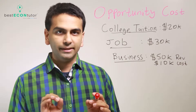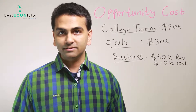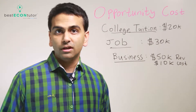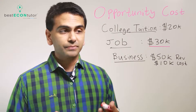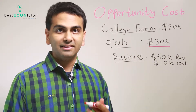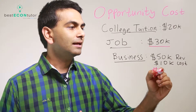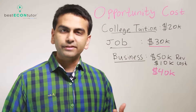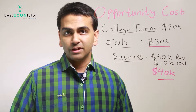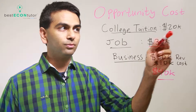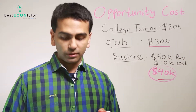Opportunity cost is the net value of the next best alternative. Let's look at all our alternatives to going to college. Alternative one is having a job, which gives $30,000 of value. The other alternative is starting your own business, which has a net value of $40,000, because there's $50,000 in revenues but you spend $10,000. So net you're getting $40,000 from the business but only $30,000 from the job. While your physical cost of going to college is the $20,000 tuition, your opportunity cost — the net value of the next best alternative — would be $40,000.